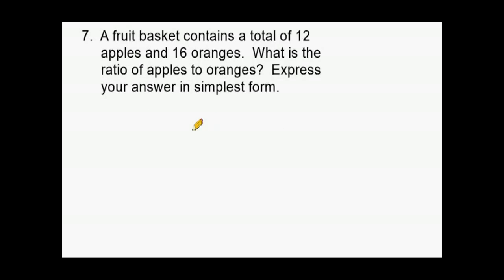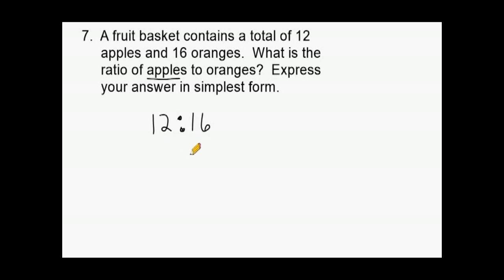A fruit basket contains a total of 12 apples and 16 oranges. What is the ratio of apples to oranges? Apples are asked first, so we write 12 first and 16 oranges second, and we need to express this in simplest form. The greatest common factor of 12 and 16 is 4. Some students may reduce by 2 first, but that will not give the answer in simplest form.